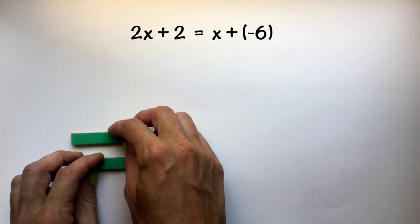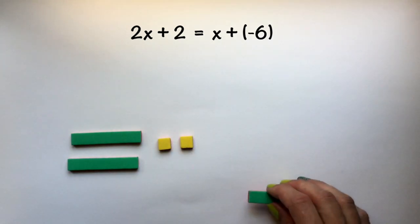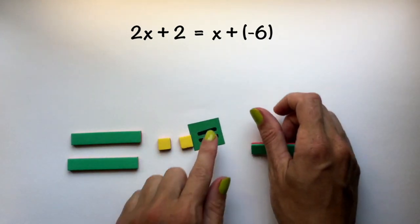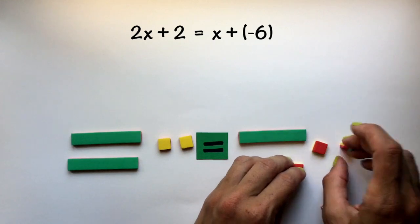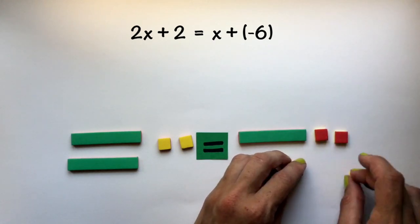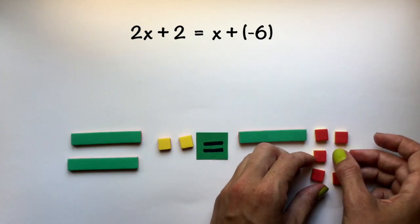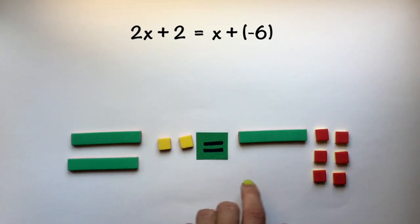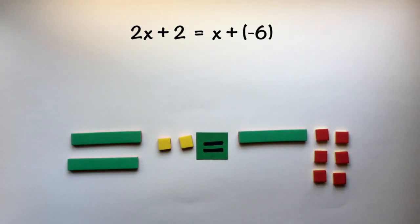Let's put it all together with a multi-step equation: 2x plus 2 is equal to x minus 6. Now let's remember that minus 6 is going to equal plus negative 6, and we have modeled 2x plus 2 equals x plus negative 6, or x minus 6.